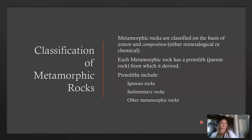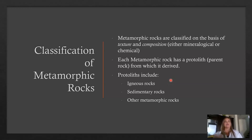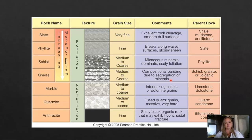Metamorphic rocks are classified by their texture and composition — composition being their mineralogy or chemistry. Each metamorphic rock has a protolith, which is the parent rock from which it derived before it was metamorphosed. Protoliths can be igneous, sedimentary, or other metamorphic rocks. For example, the protolith of gneiss is granite — granite is what the rock started as, and as it was metamorphosed it changed into gneiss.